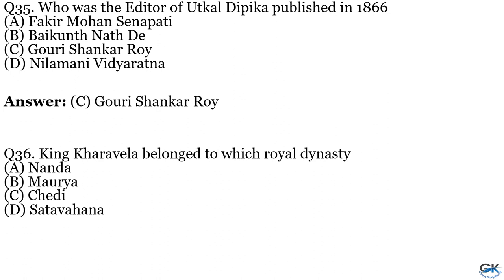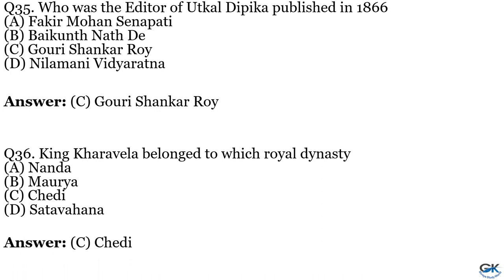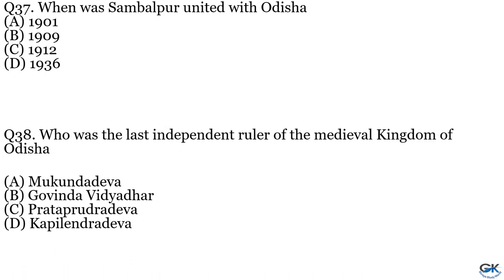Question No. 36: King Kharavela belonged to which royal dynasty? The answer is Option C. Question No. 37: When was Sambalpur united with Odisha? Option A: 1901. Option B: 1909. Option C: 1912. Option D: 1936. The answer is Option D, 1936.